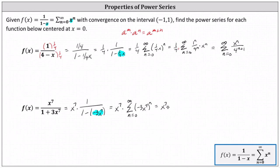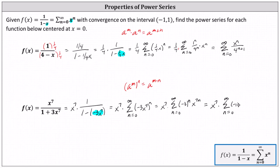We write this as x to the seventh times the sum from n equals zero to infinity of negative three to the power of n times x to the power of seven n. Here we're using the exponent property: when we have powers raised to powers, we multiply the exponents. Because we have negative three raised to the power of n, it's common to write that as negative one to the power of n times three to the power of n. So this becomes x to the seventh times the sum from n equals zero to infinity of negative one to the power of n times three to the power of n times x to the power of seven n. Bringing x to the seventh into the power series gives x to the power of seven n plus seven.